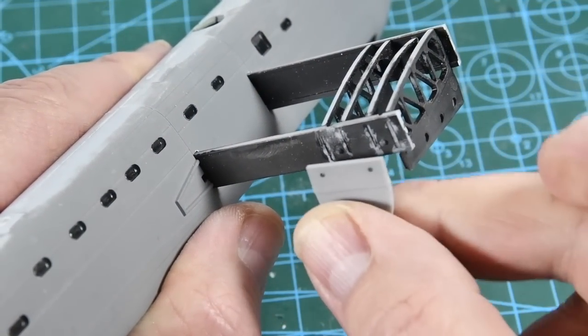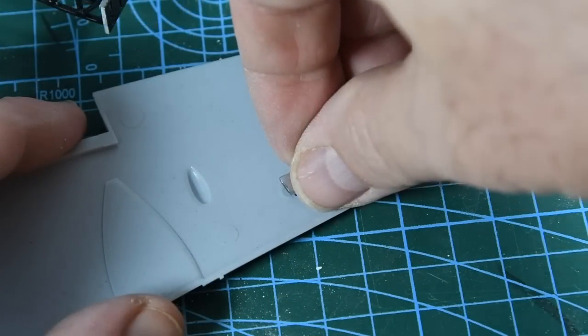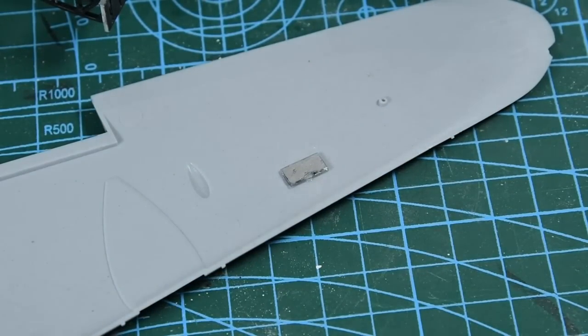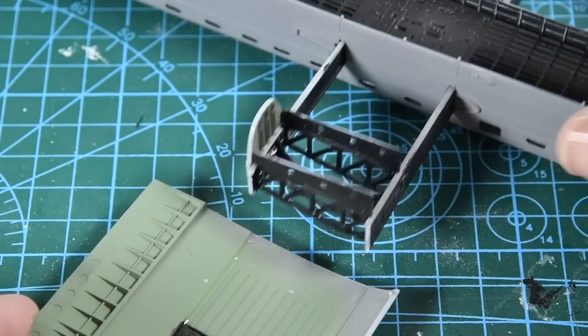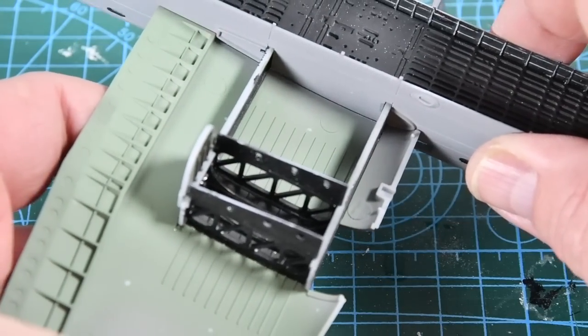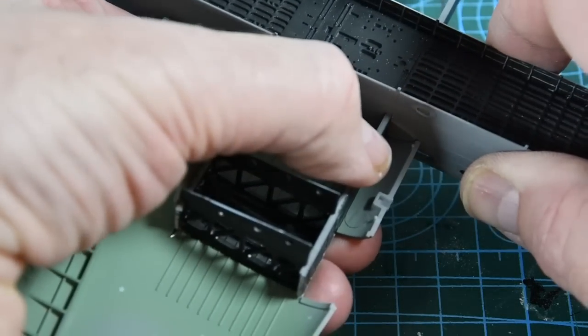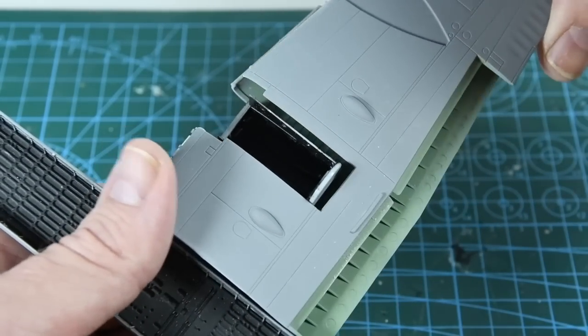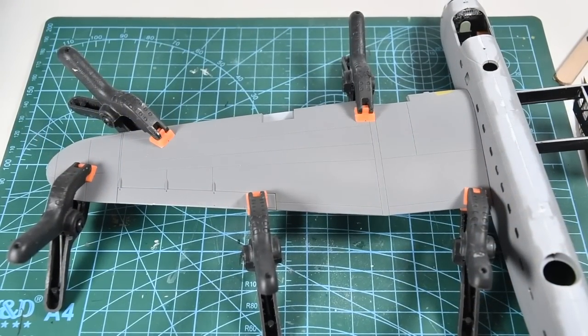And now that the formers have set up, I can add the rear bulkhead for the wheel wells to each side. I can finish prepping the wings by adding these ID lights. Again, I've backed them with silver paint to give the appearance of a reflector. And at last I can start assembling the wings. The upper surface goes on first, and this gets glued to the spars and the undercarriage box. Then the lower surface slides into place. Again, I'm using clamps and tape to hold everything together while it sets.